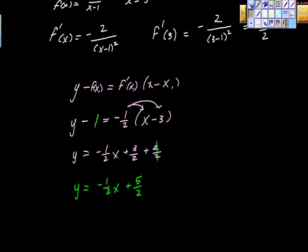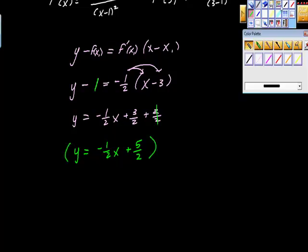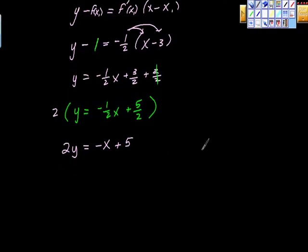The problem here is that the answer they gave us in the book is in standard form, which means the x value must be a whole number. So I'm going to multiply the whole thing by 2. We get 2y = -x + 5. Now we can rearrange it in the form ax + by = c. Add x to both sides. We get x + 2y = 5.